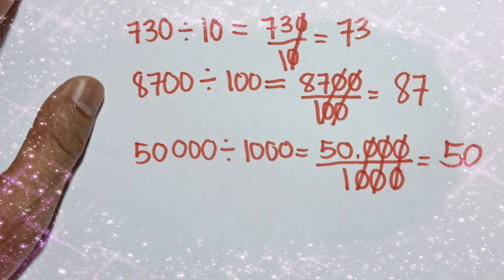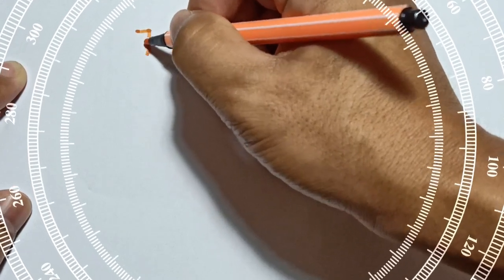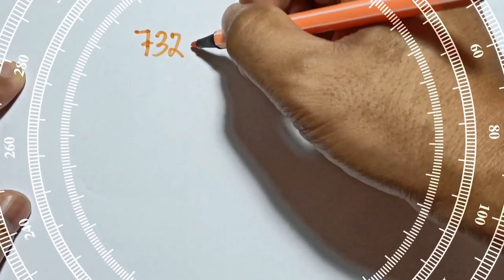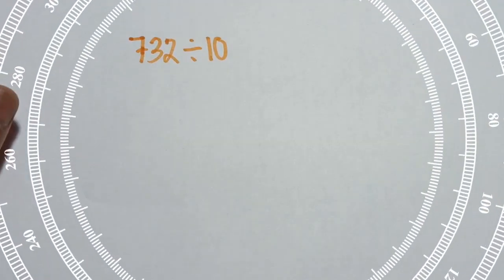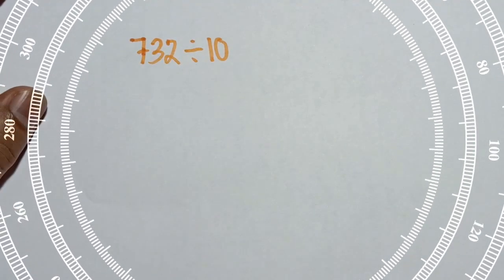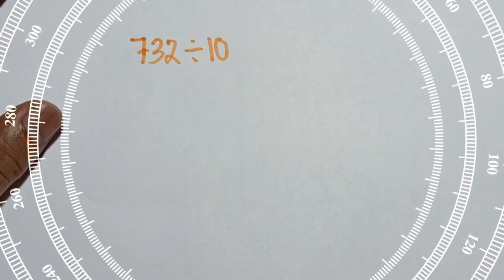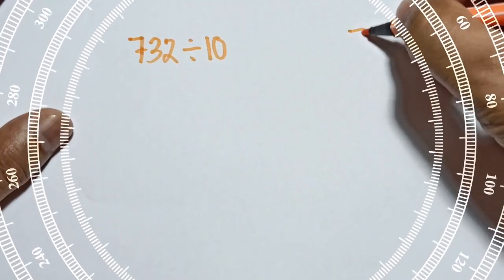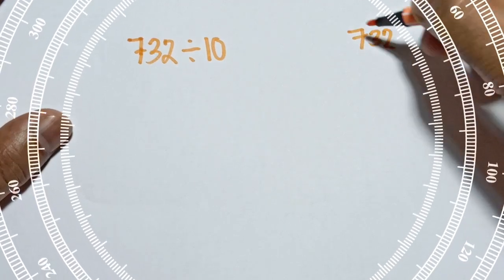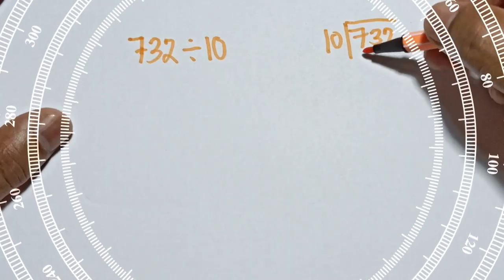But what if your dividend does not end in zero? For example, if you have 732 divided by 10. Normally with that kind of number we apply the traditional way, where you do long division: 732 divided by 10.